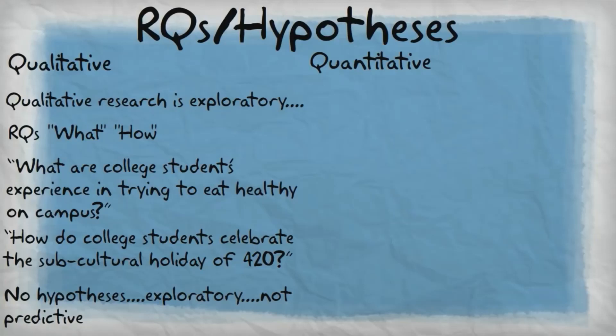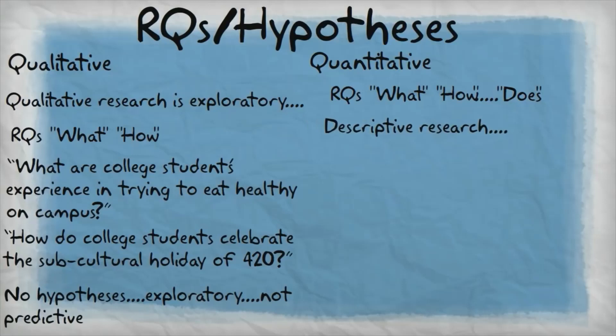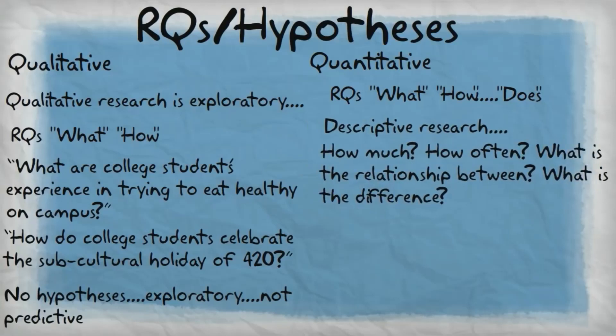Similar to qualitative research, quantitative research questions can start with the words what or how, but they might also include the word does in the beginning of the question. In descriptive quantitative research, research questions ask, how much, how often, what's the relationship between variables, what's the difference between the variables? For example, what percent of middle college students wash their hands after using campus bathrooms? Or, what is the relationship between college student gender and hand washing practices after using campus bathrooms?